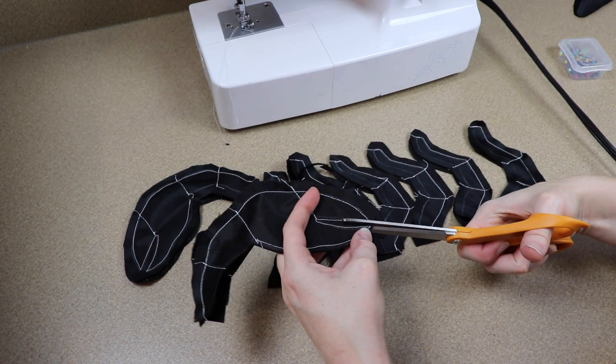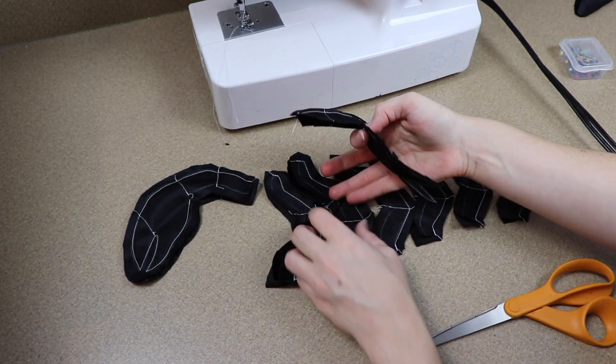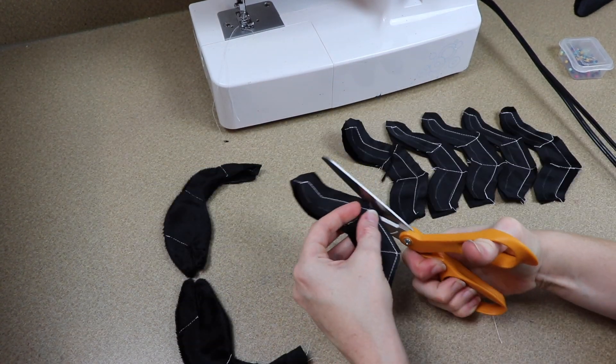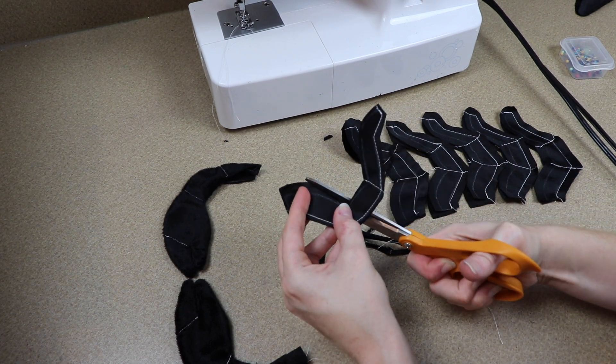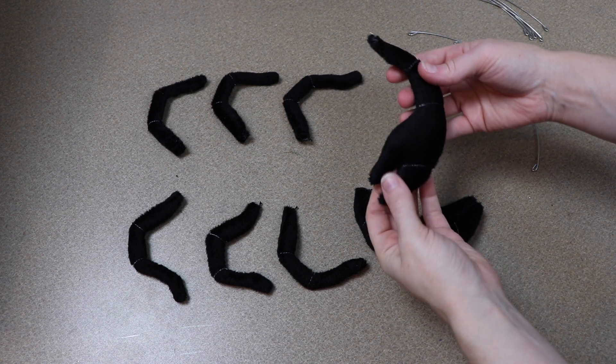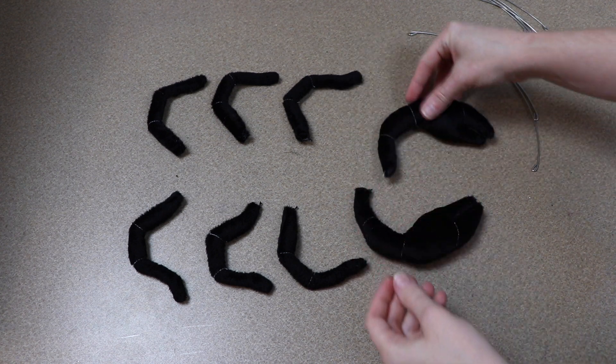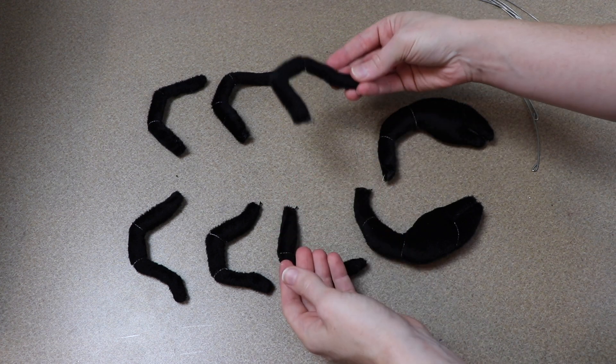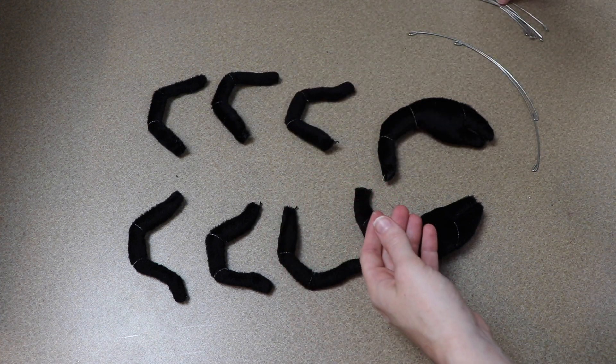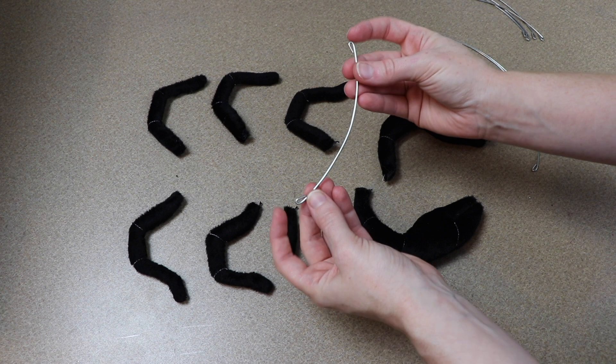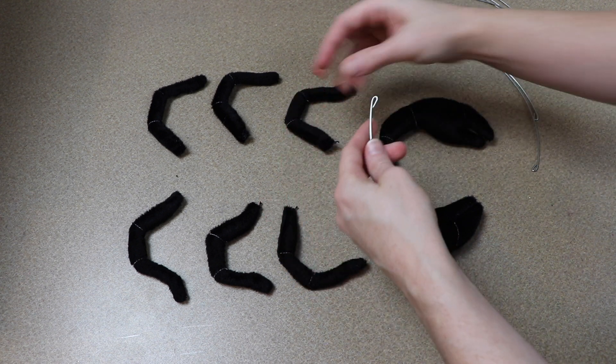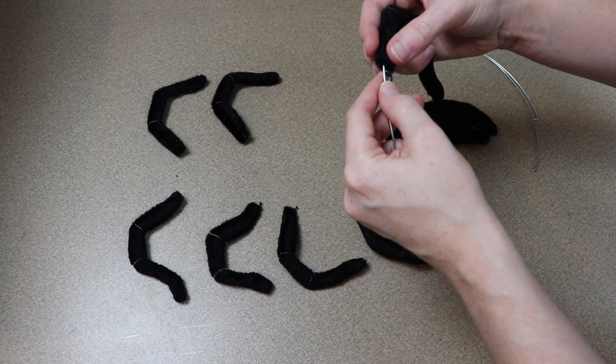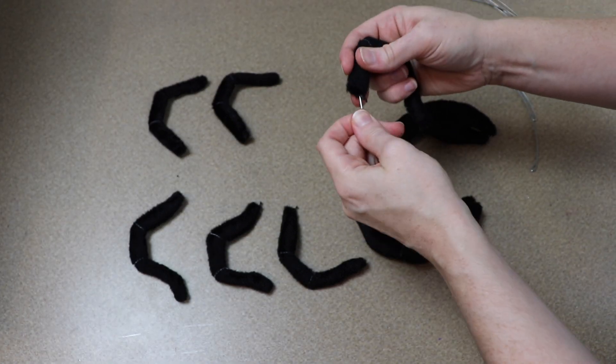And then after we have any excess fabric cut off we're going to flip those right side out, stuff them, and start closing everything up. So they're going to look something like this. I decided that I wanted them to hold their shape a little bit better so I decided to cut some wires to fit inside of the legs. I bent those wires into place and I'm just going to slide them into the legs and the pincers. And I'm just doing this so it holds its shape better. There's really not any poseable purpose to this other than that.